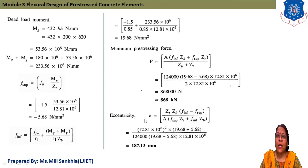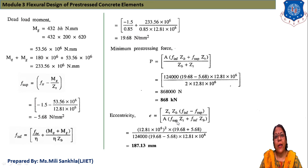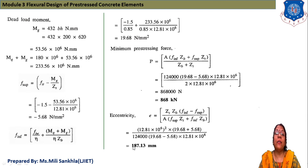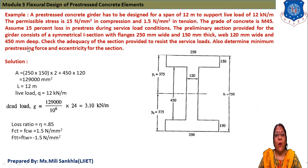Finally, the eccentricity e = (Z_t·Z_b·(f_inf − f_sup)) / (A·(f_sup·Z_t + f_inf·Z_b)). Substituting all values, we get eccentricity e = 187.13 mm. This completes the rectangular section example.